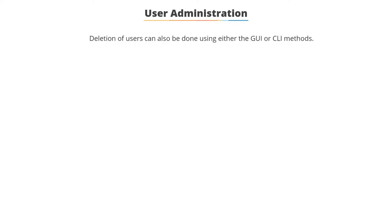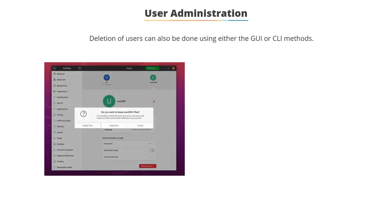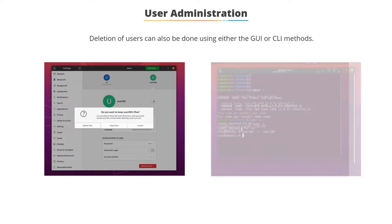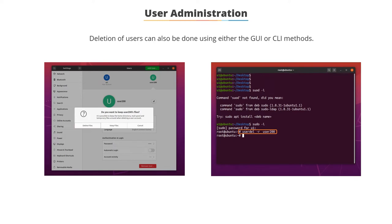Like addition, deletion of users can also be done using GUI and CLI methods. You can use either 'userdel' followed by the username, or 'userdel -r' followed by the username command to remove or delete users from the system. The -r flag refers to the home directory, so even the home directory is deleted along with the user details.